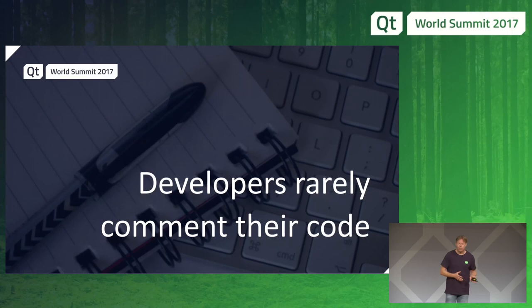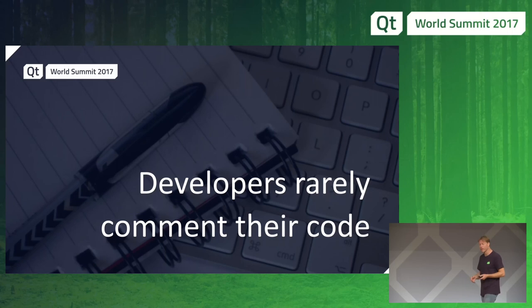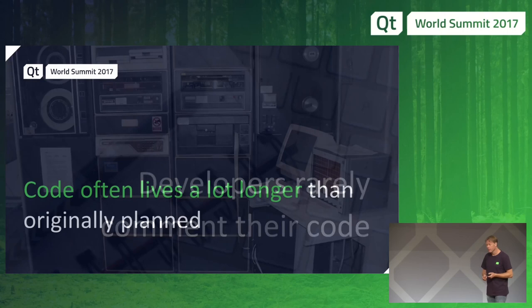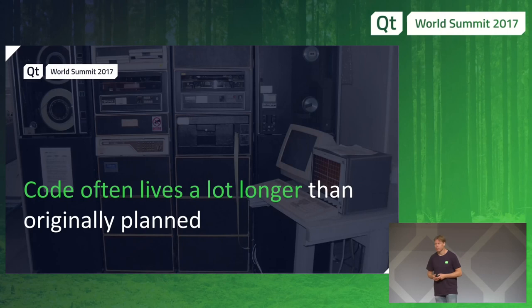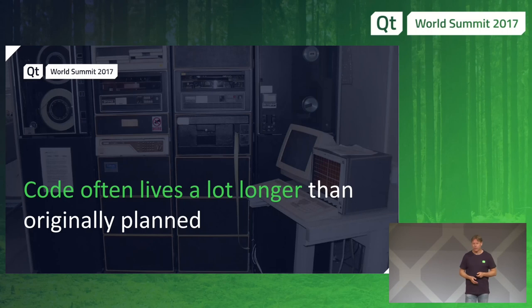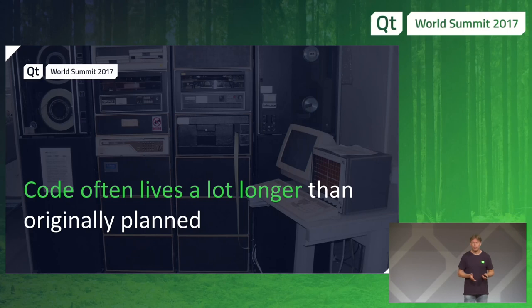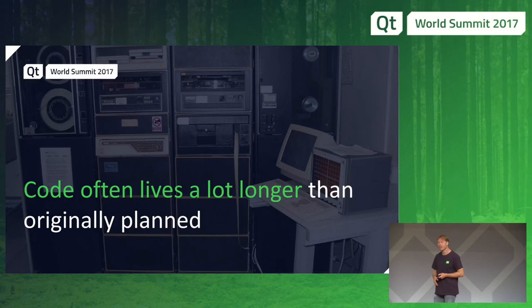Developers rarely comment their code — I'm very bad at that myself. That makes it really important that code stays readable and maintainable. Code often lives a lot longer than originally planned. The world's banking systems still run largely on code written in the 70s. Same with code inside Qt — the framework is just over 20 years old, and some areas have been untouched for all of those 20 years.